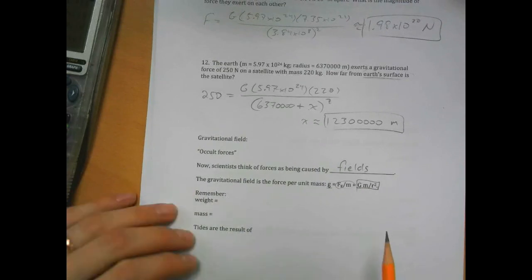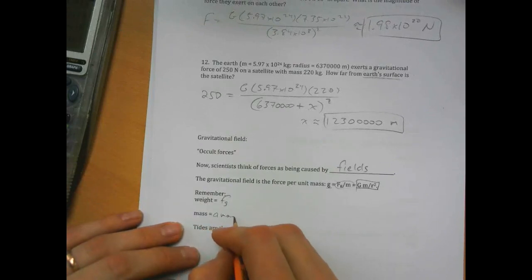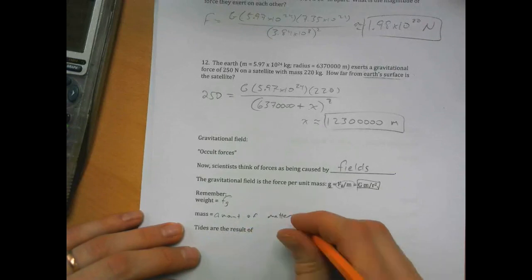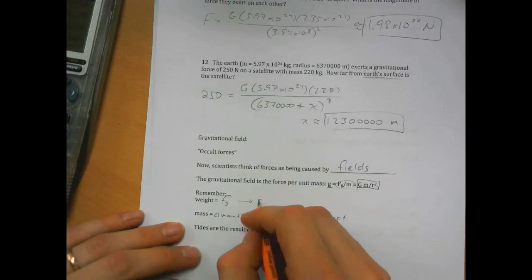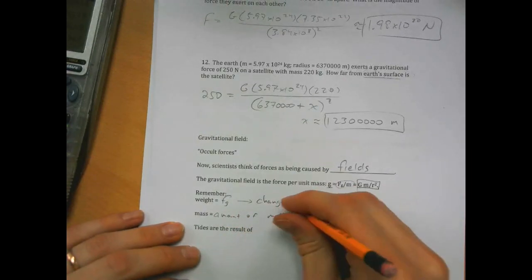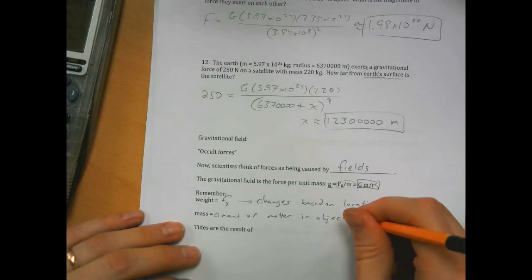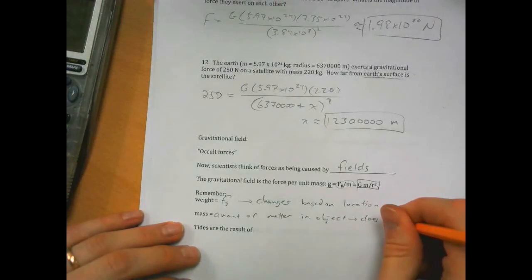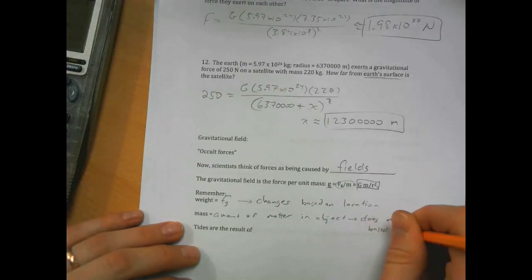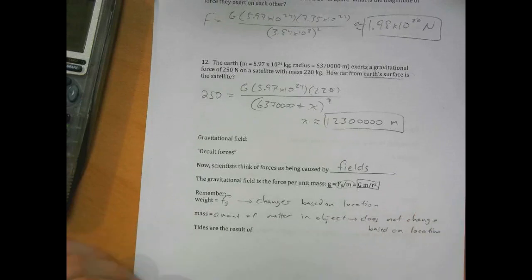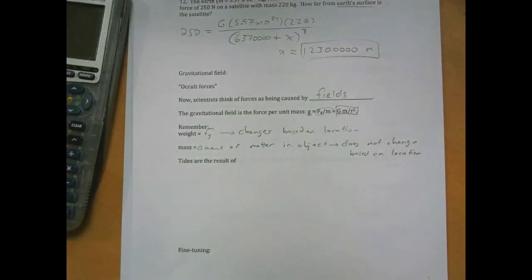Remember there's a distinction between mass and weight. Weight is gravitational force, mass is the amount of matter in the object, so weight changes based on location. Mass does not change based on location. So if I go to the moon, my weight becomes less, but my mass stays the same.